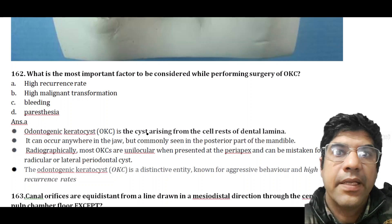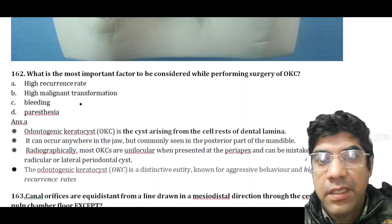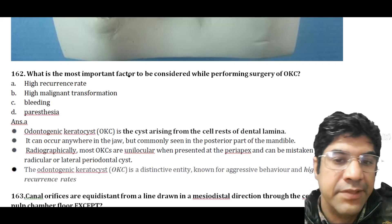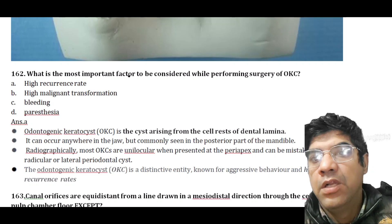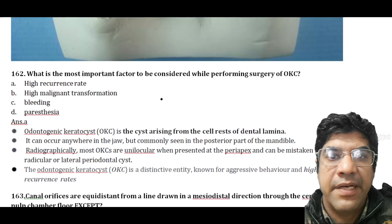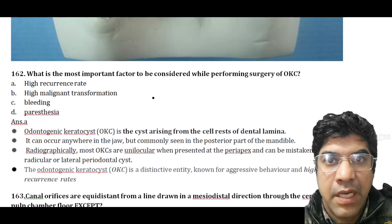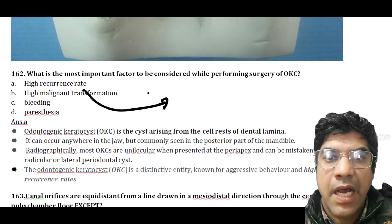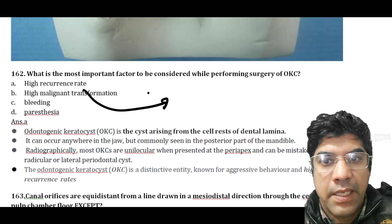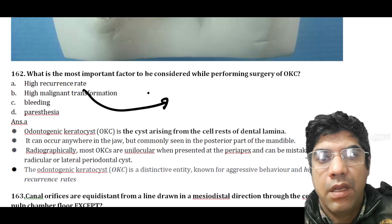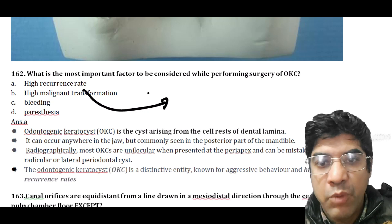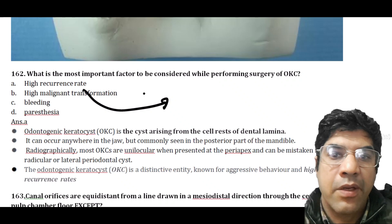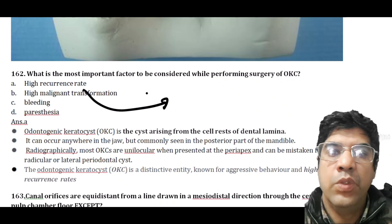The most important factor to consider while performing surgery on OKC (odontogenic keratocyst) is its high recurrence rate. OKC arises from the cell rests of the dental lamina and is more commonly seen in the posterior mandible. It has a tendency to recur after initial surgical treatment, and is known for aggressive behavior including rapid growth and invasion into adjacent structures.